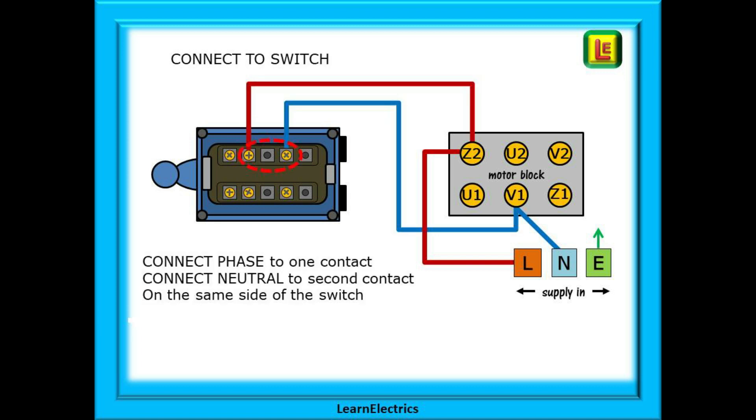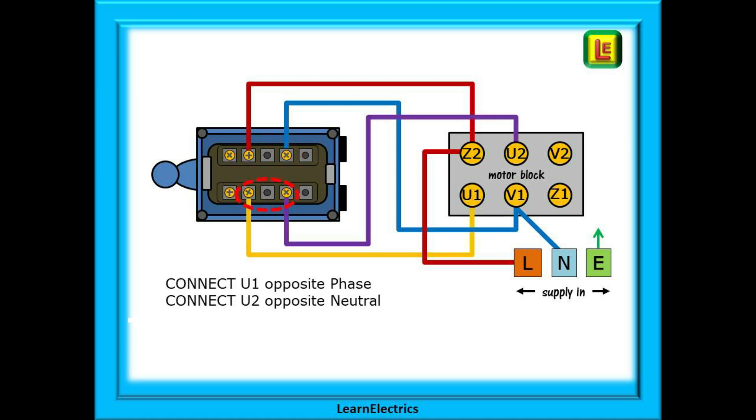Now start connecting the wires from the motor block to the switch. Connect the phase wire from Z2 to contact number three of our switch and the neutral to contact number seven. It is very important that the phase and neutral are on the same side of the switch. Now we can connect U1 on the motor block to contact four on the switch and U2 on the motor to contact number eight of the switch. U1 should be opposite the phase and U2 opposite the neutral.